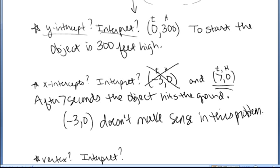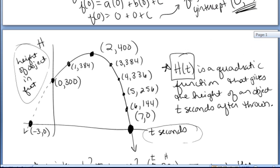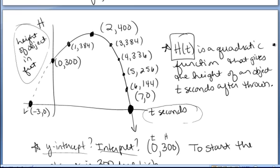Again, if you just glance at the graph, since t represents the number of seconds after the object was thrown, we really only can consider points starting at 0 seconds and after. We could not consider before 0 seconds.